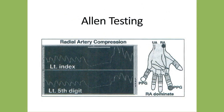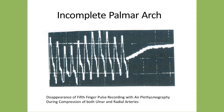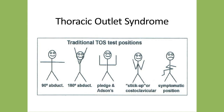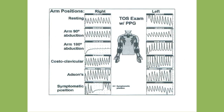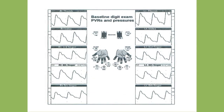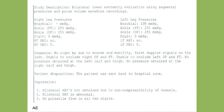PPG can be used for Allen testing — assessing the palmar arch by compressing the radial or ulnar artery — applicable before radial artery catheterization or AV fistula/dialysis graft placement. Compressing with a flat fifth digit confirms an incomplete arch. Thoracic outlet testing can be performed with position testing at 90 degrees, 180 degrees, the Adson maneuver, and in the symptomatic position; abnormalities can be detected at 180 degrees and in the symptomatic position while the contralateral side is normal. Baseline PPGs and PVRs may be normal or may show embolic disease.